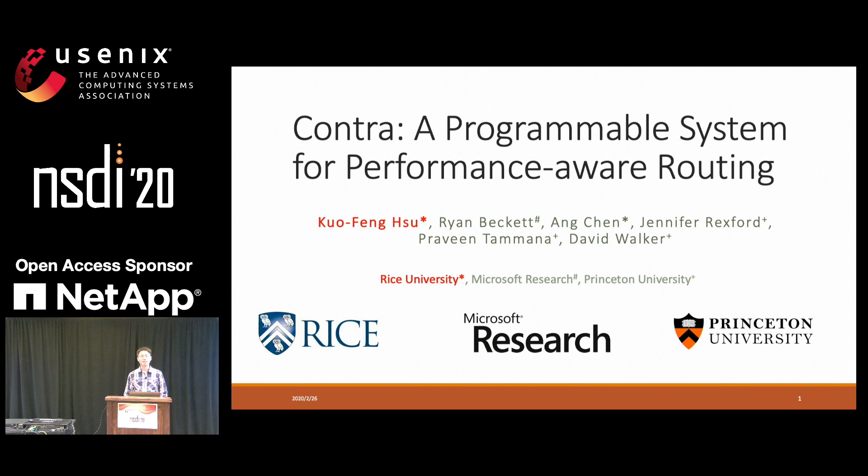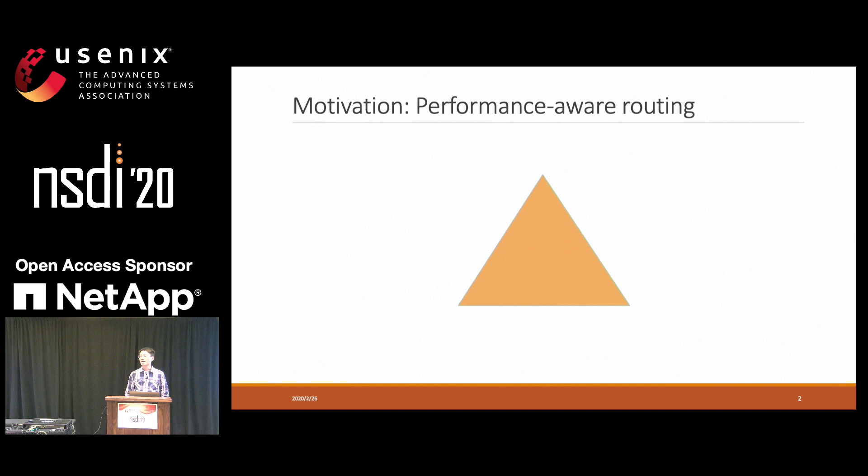Modern applications send a lot of data over the network, and therefore it is important to support efficient routing protocols. Typically, we can think of three important goals. First, for performance, we need to support traffic engineering, and therefore we may want to prefer the least-utilized path over other paths.